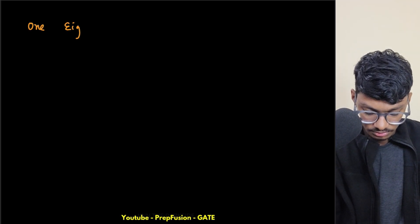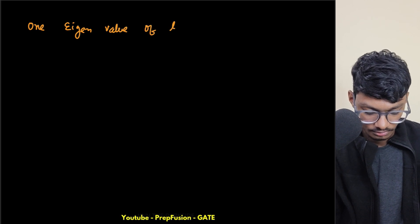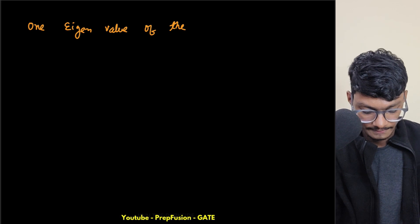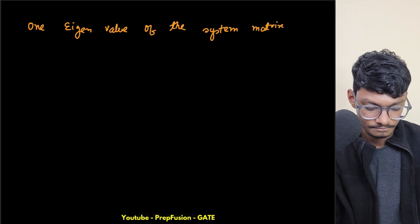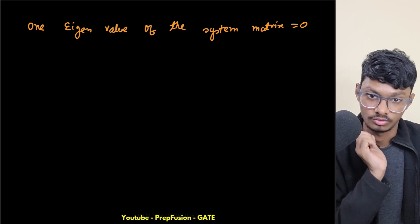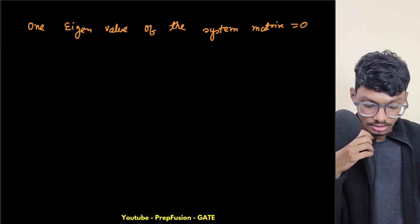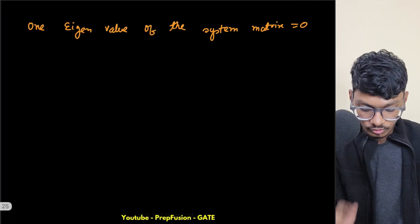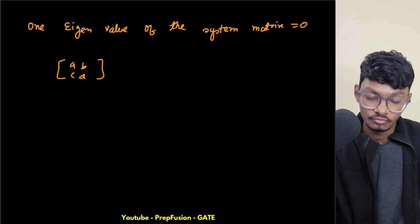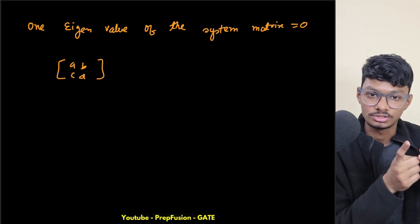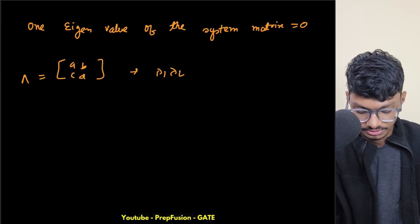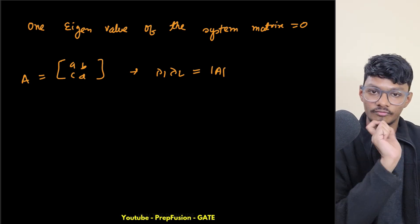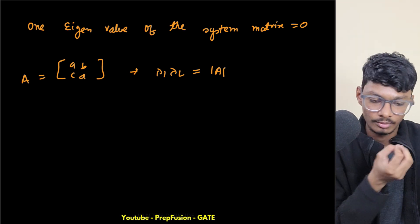So one eigenvalue of the system matrix equals zero and the other will be non-zero. For a 2×2 matrix with elements a, b, c, d, we know that the product of the eigenvalues equals the determinant of the matrix. So λ₁ × λ₂ equals det(A). Since λ₁ = 0, the determinant of A must equal zero regardless of λ₂.